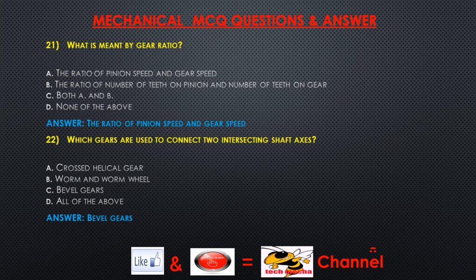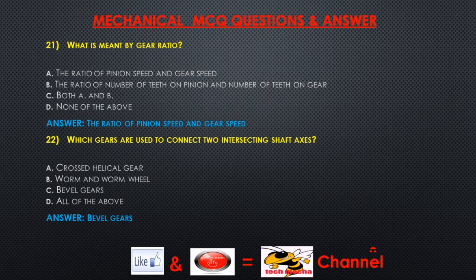Question 21: What is meant by gear ratio? A) the ratio of pinion speed and gear speed, B) the ratio of number of teeth on pinion and number of teeth on gear, C) both A and B, D) none of the above. Answer: The ratio of pinion speed and gear speed. Question 22: Which gears are used to connect two intersecting shaft axes? A) crossed helical gear, B) worm and worm wheel, C) bevel gears, D) all of the above. Answer: Bevel gears.